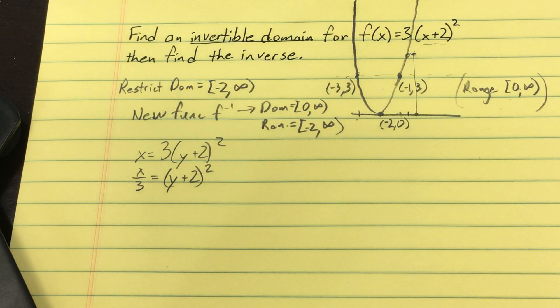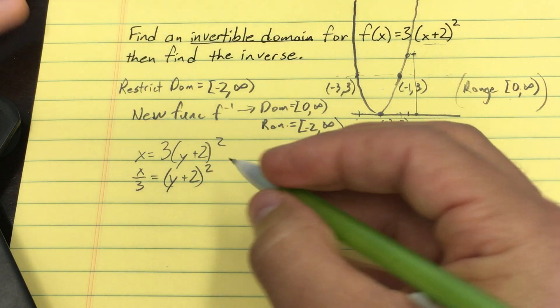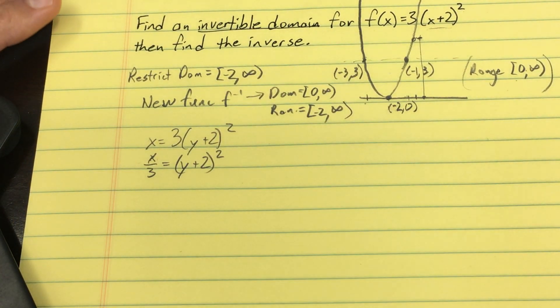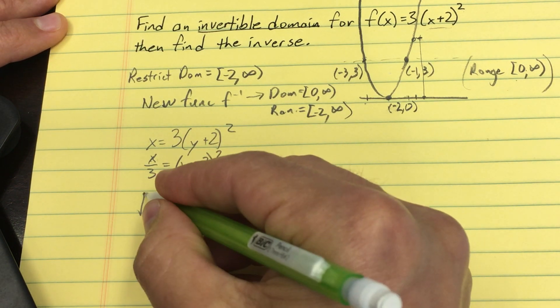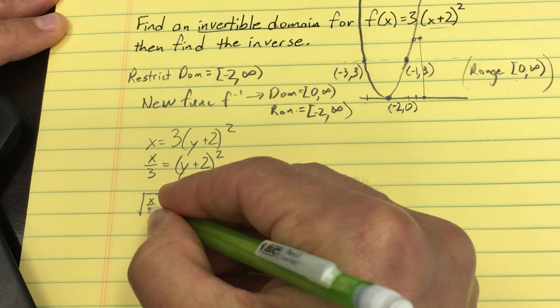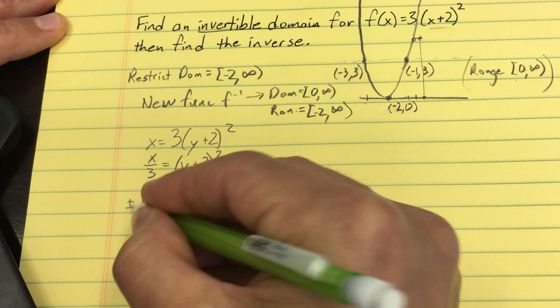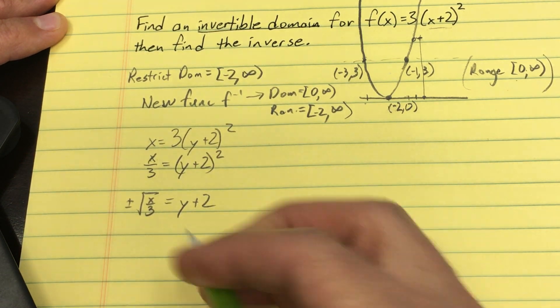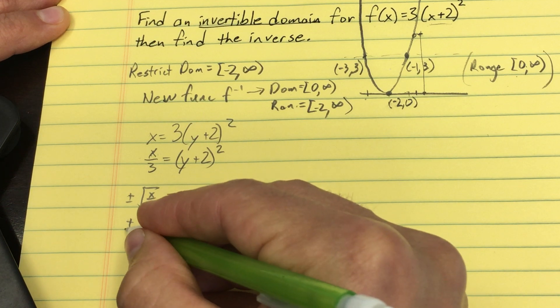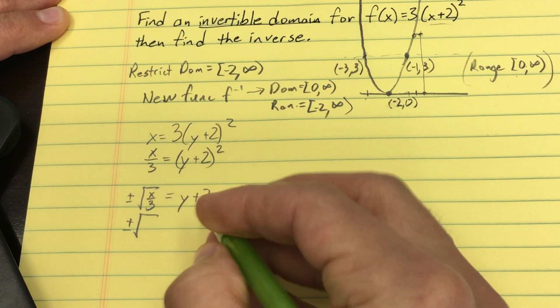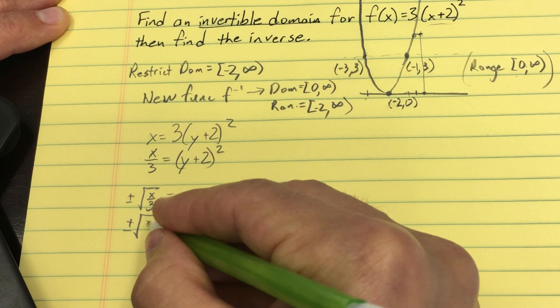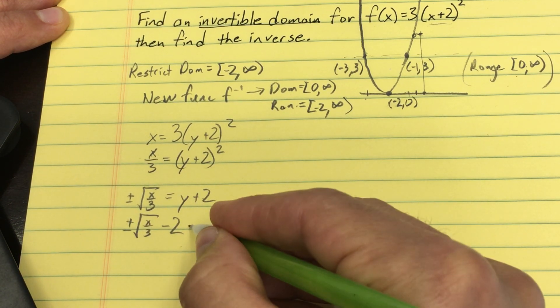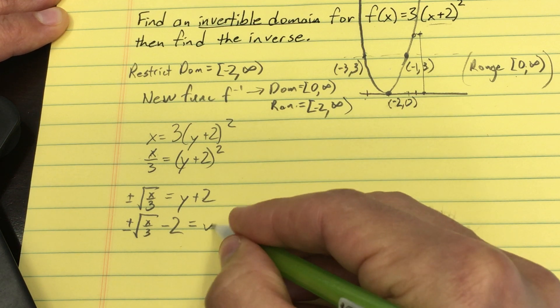Now, there are two ways to, quote, undo squaring. They both involve the square root. One is plus the square root, and one is minus the square root. Just to emphasize that, I'll put a plus or minus there. And then I'll subtract the 2 over there. So ±√(x/3) - 2 equals y.